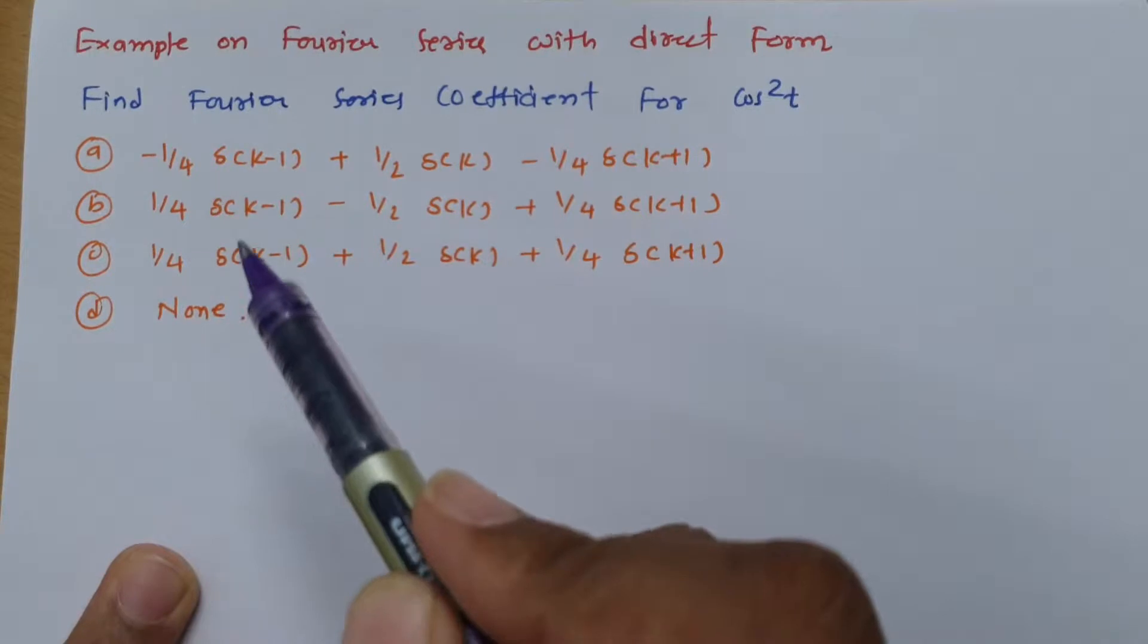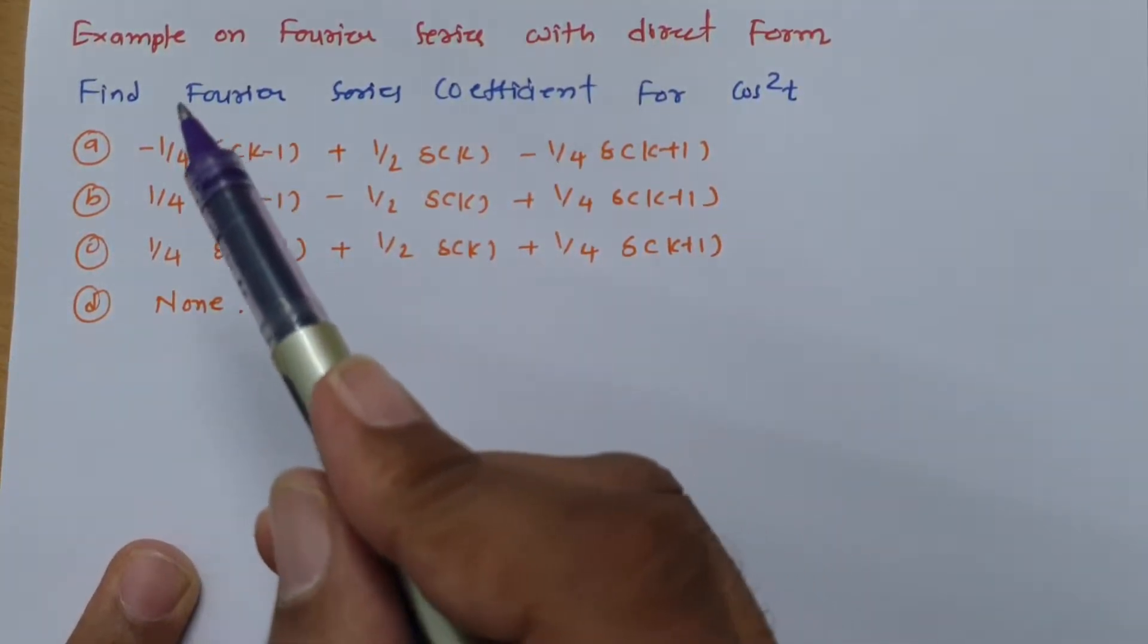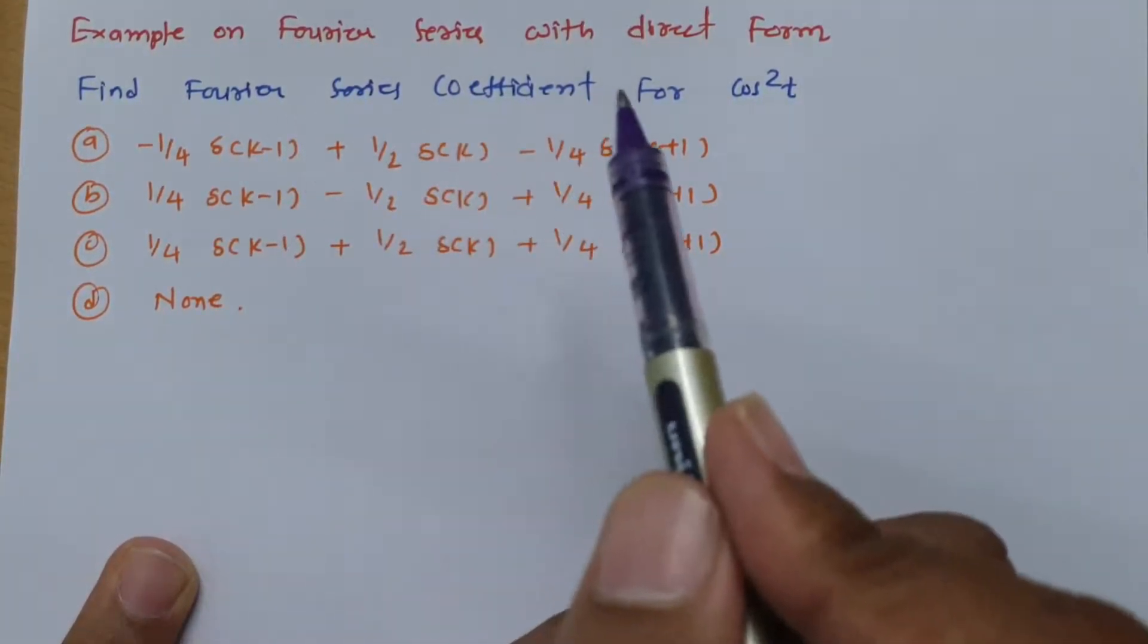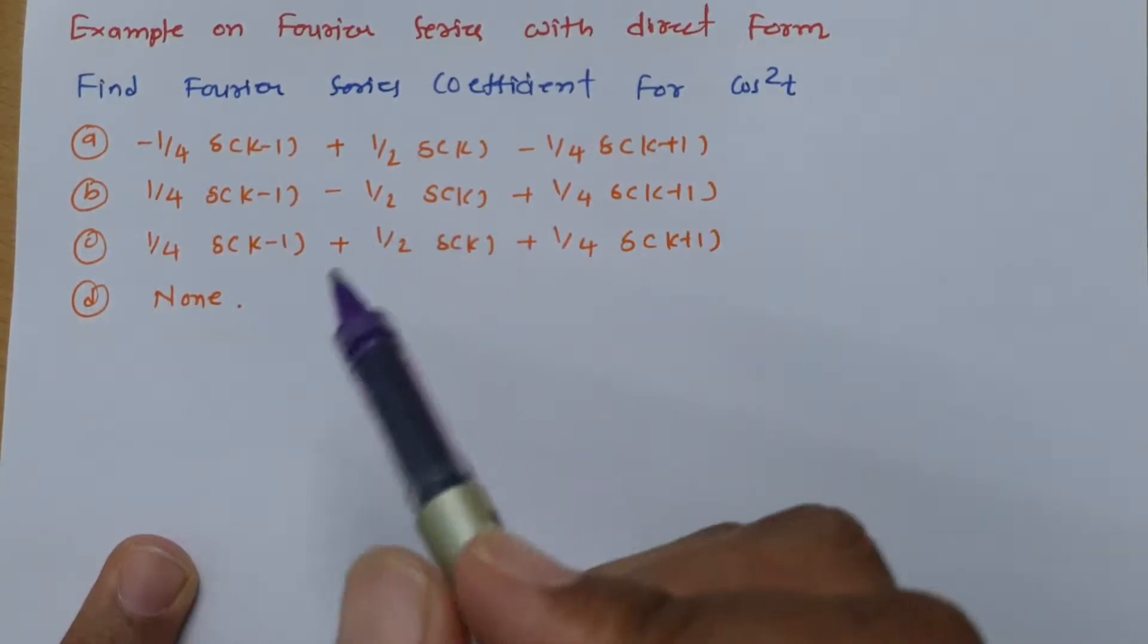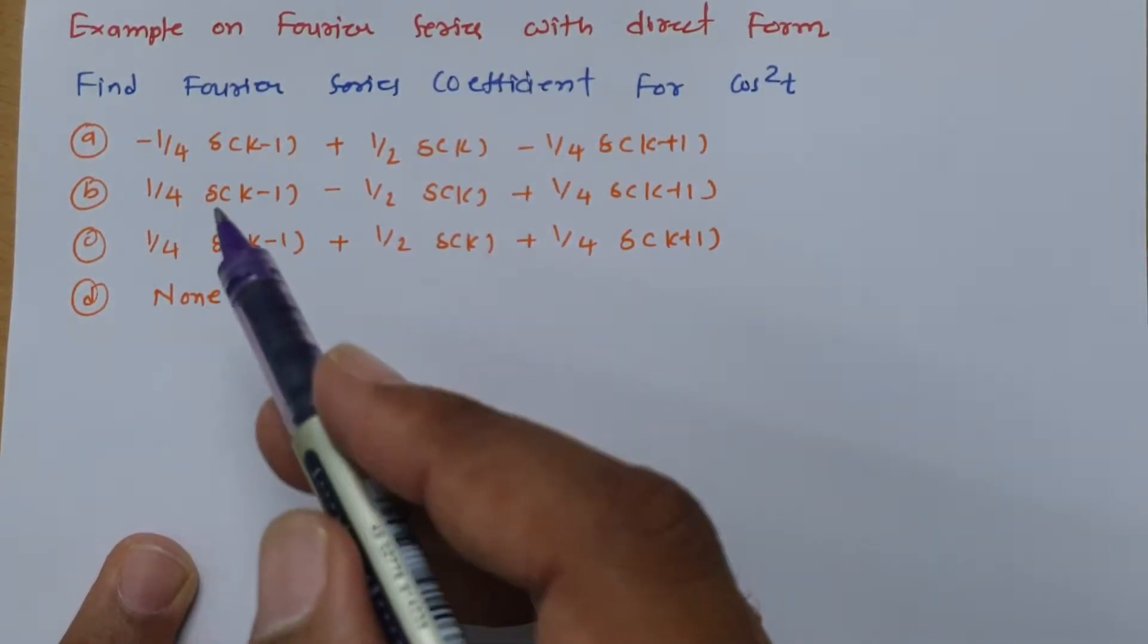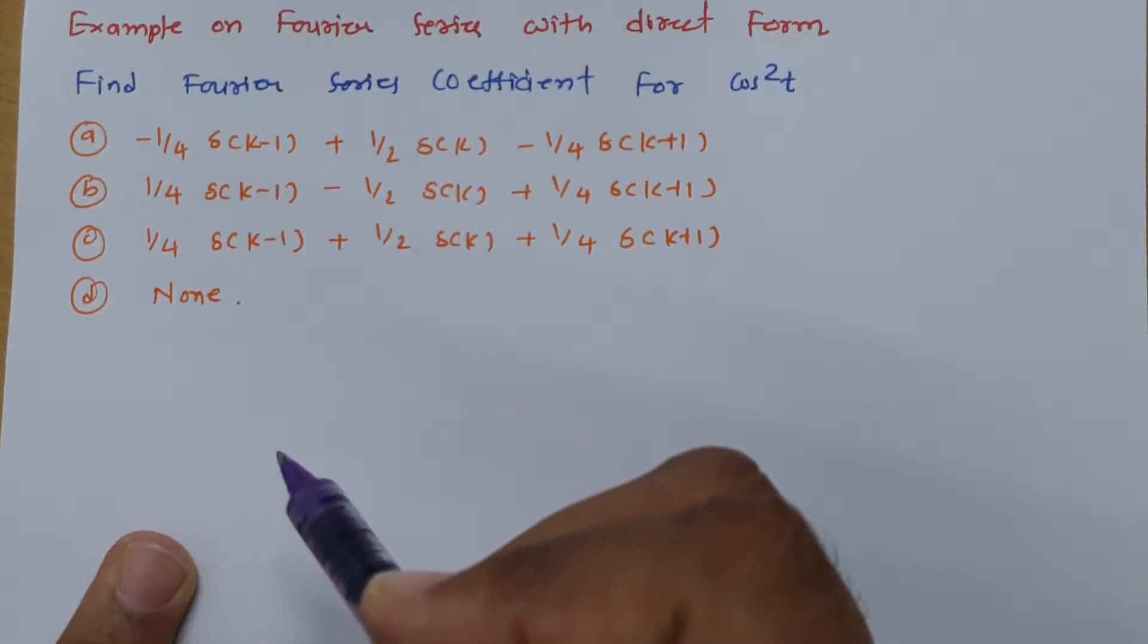And to explain that, this is my question, where question is find Fourier series coefficient for cos²t. And there are four options which is given to us.